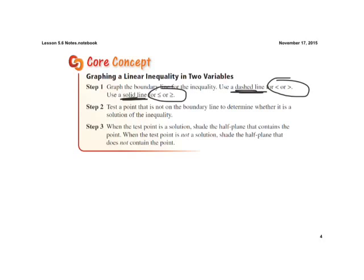The solid line, we include all the points on that line in our solution. But the dashed line, the points on the line, are not included in our solution.